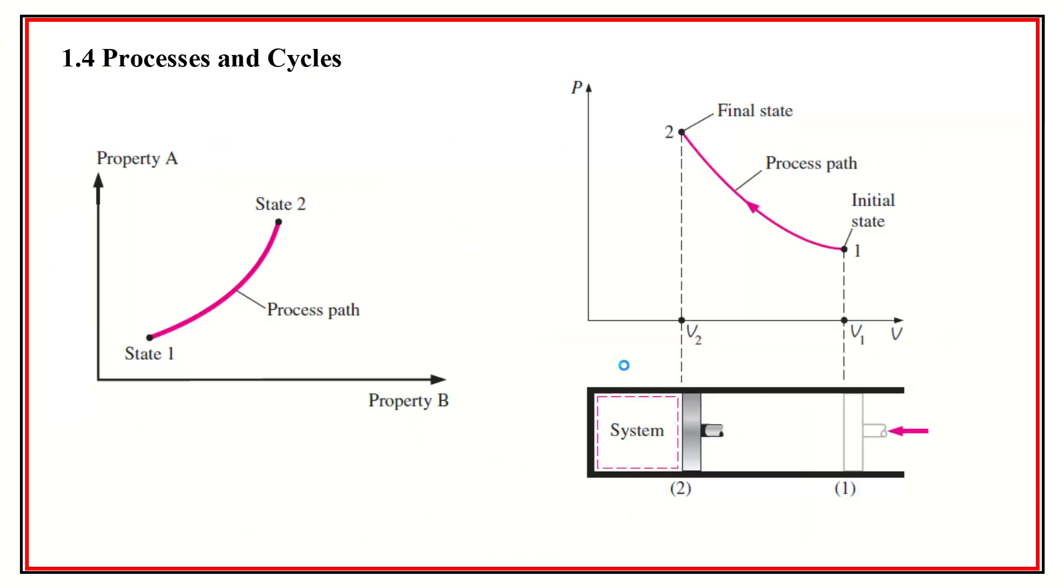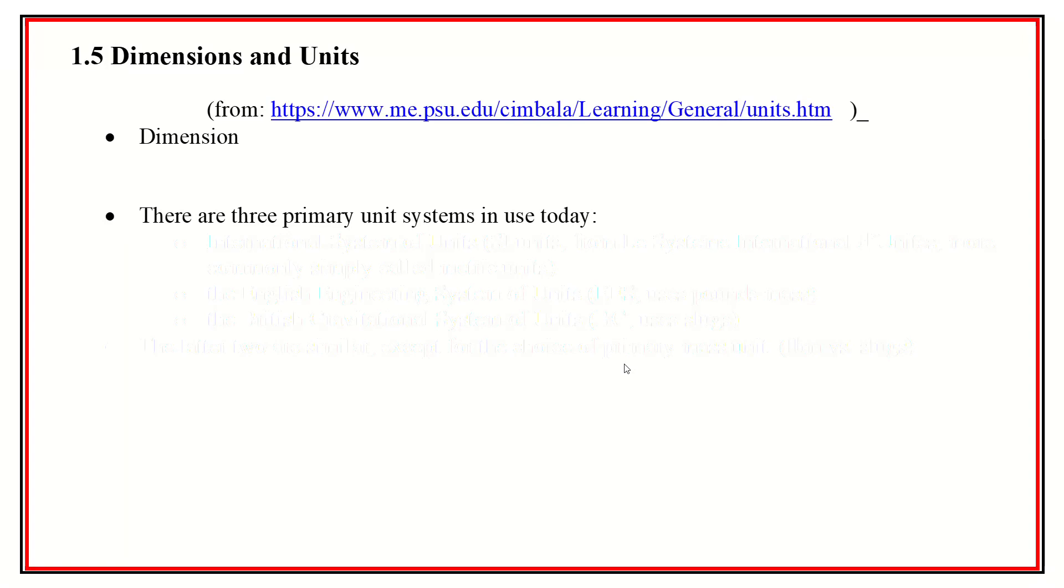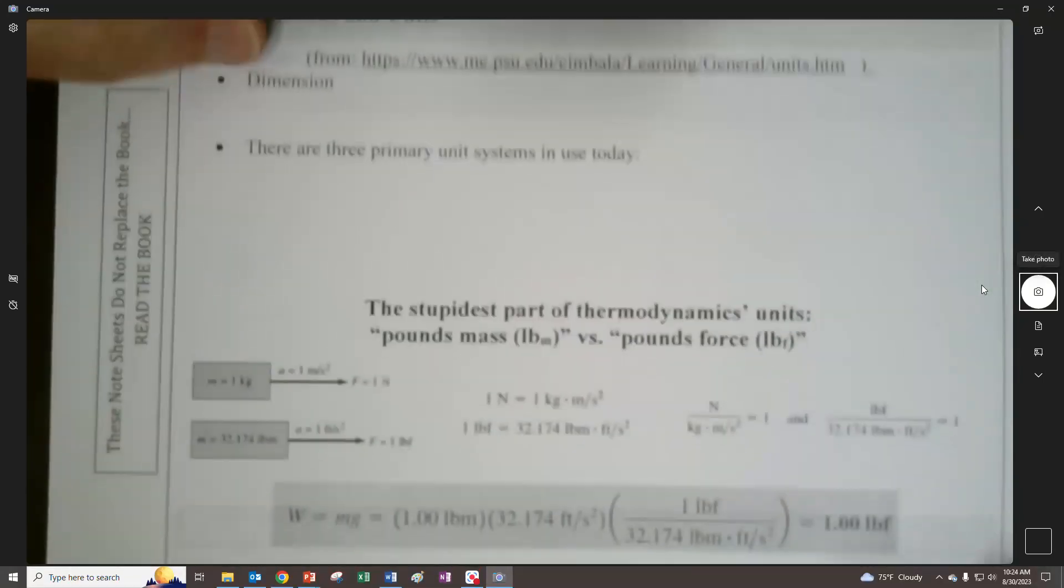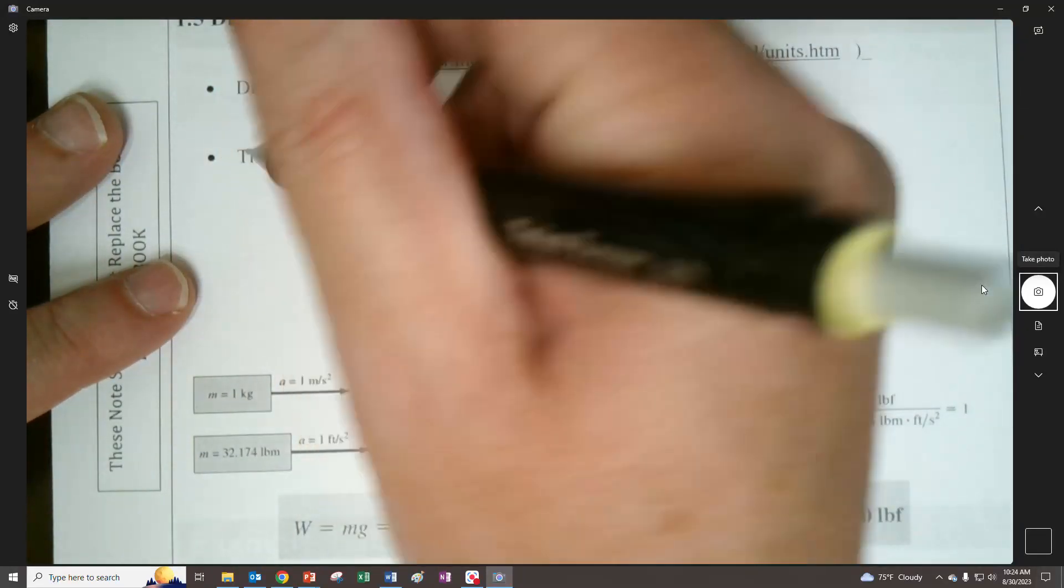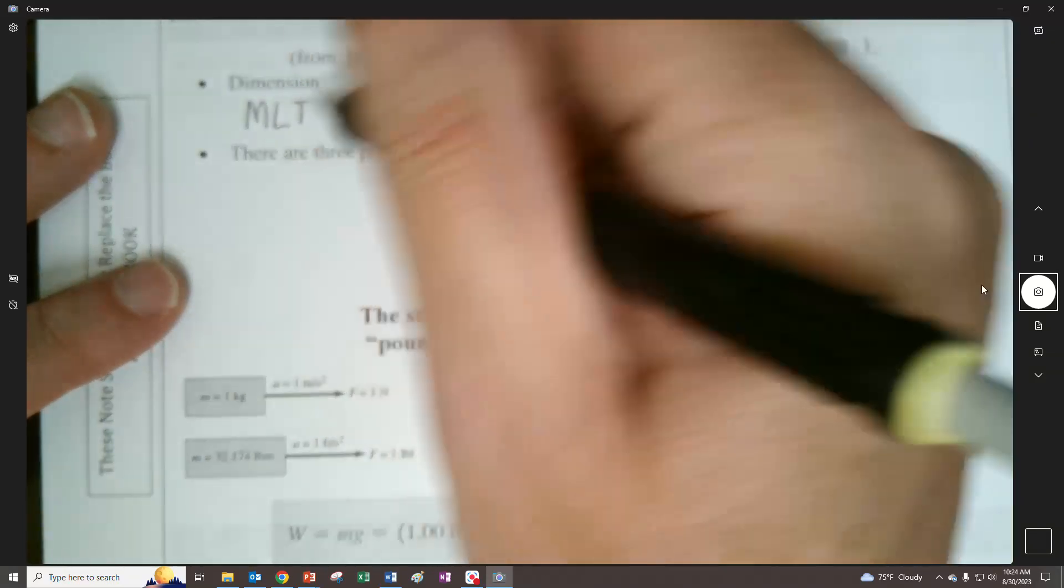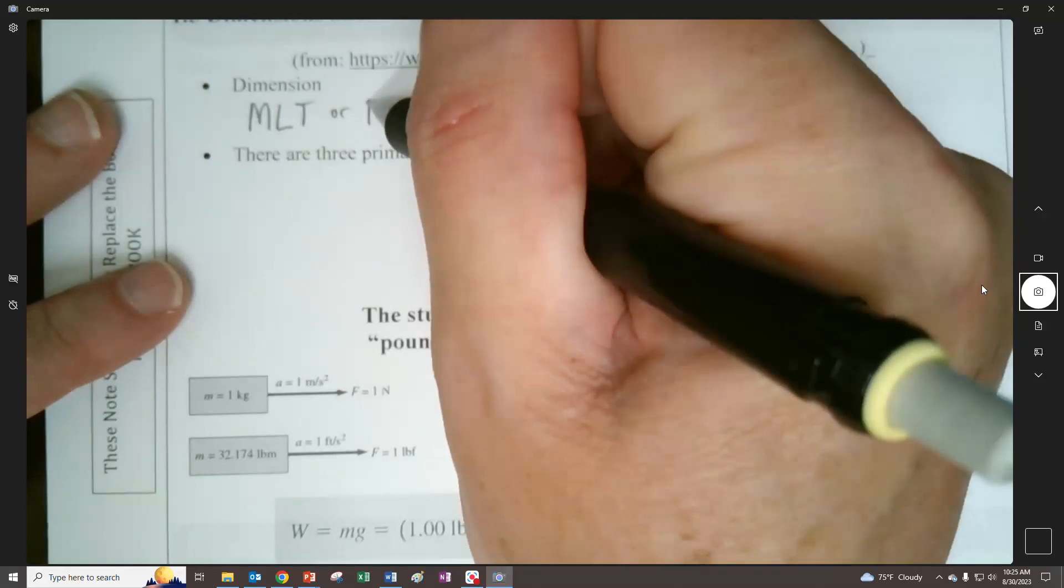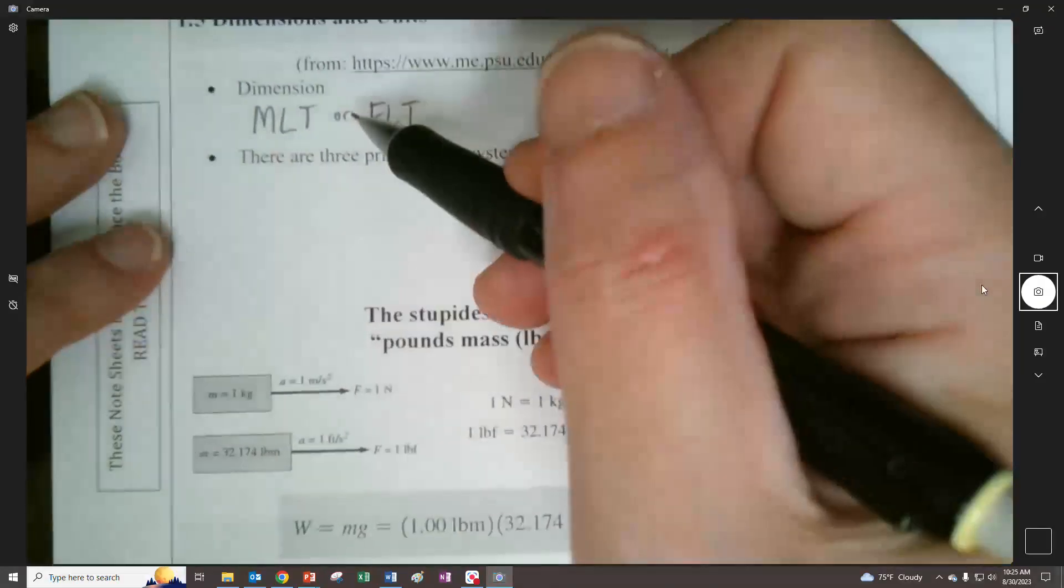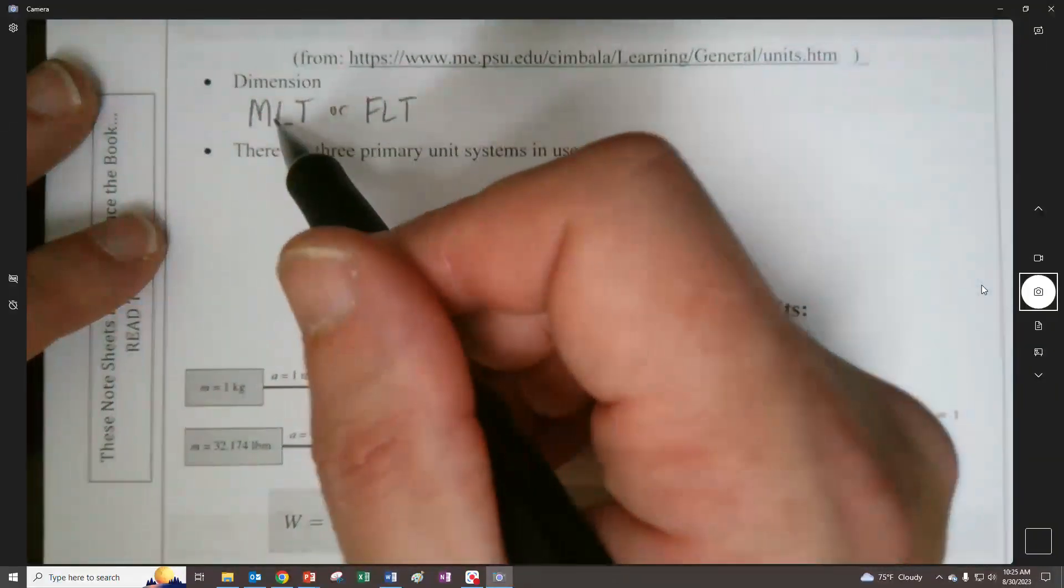Let's get down to where we left off. We left off with dimensions and units. So a dimension can be thought of as the building block to units. We have the MLT and the FLT system is what we will talk about in Fluid Mechanics. We don't really need it right now, but it's a good way to think of things.